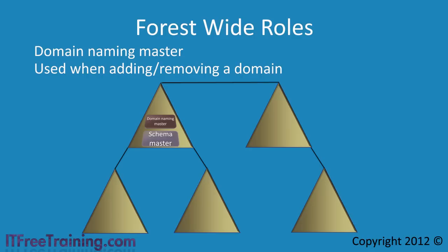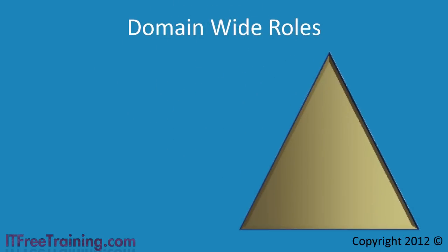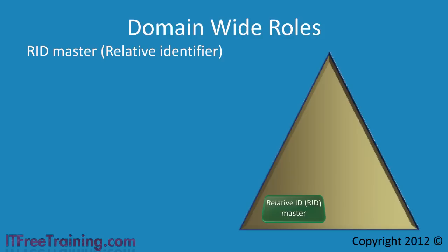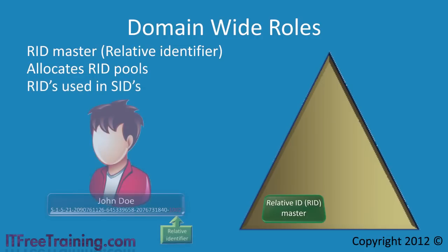The last three operational master roles are domain-wide. For each domain in your forest you will have three of these operational master roles. The first of these is the RID master. RID stands for relative identifiers. The RID master is responsible for allocating RID pools. These RID pools are essentially a lot of sequential numbers used in SIDs. Every object in Active Directory has a SID, or security identifier, associated with it. This SID is basically a unique number which Active Directory uses to identify the object.